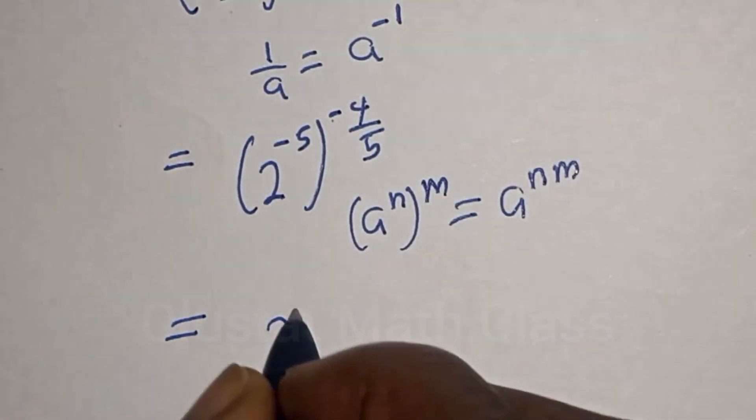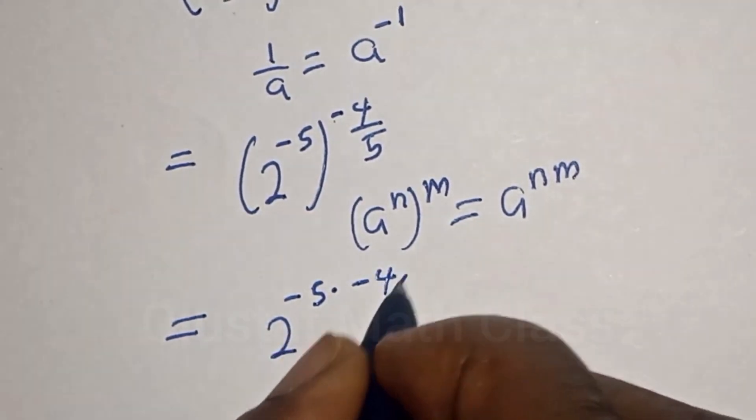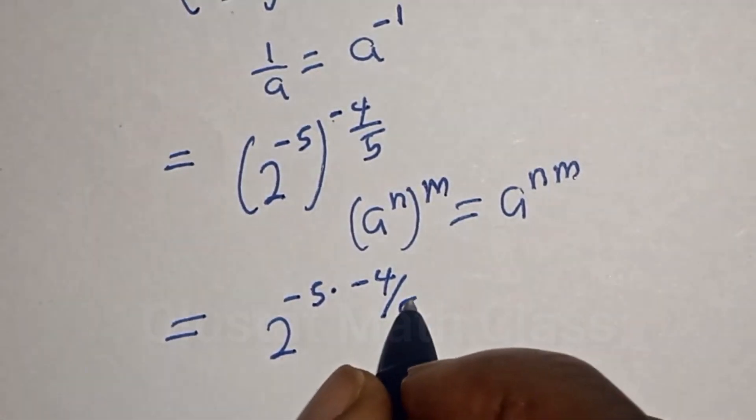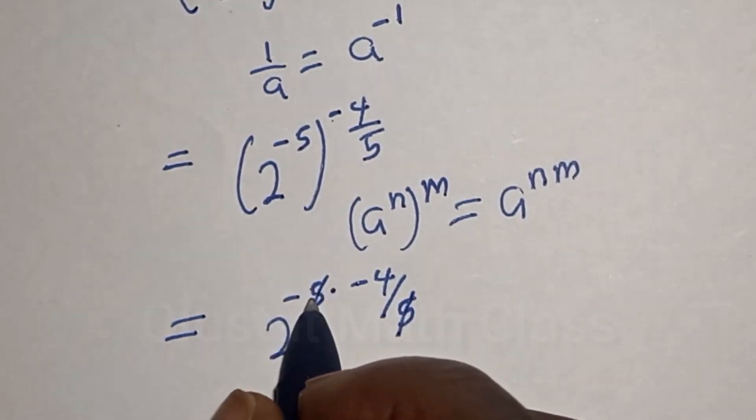2 raised to power minus 5 multiplied by minus 4 over 5. This one will cancel, and if you multiply minus 1 by minus 4 you have plus 4.